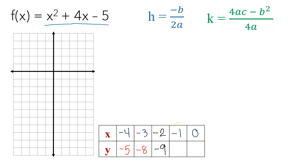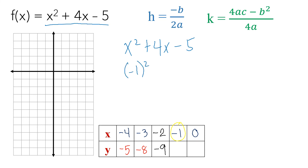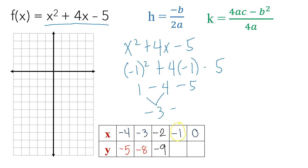Now solve for x equals negative 1. Using the same equation: negative 1 squared plus 4 times negative 1 minus 5. Negative 1 squared is 1, and 4 times negative 1 is negative 4. So 1 and negative 4 gives negative 3, minus 5. Both are negative, so 3 plus 5 equals 8, and we copy the negative sign. y equals negative 8.